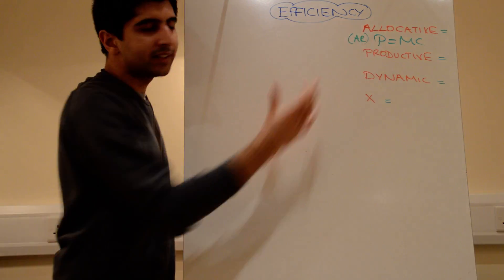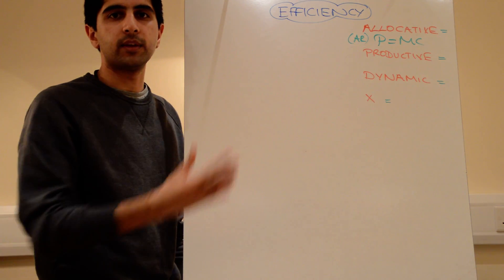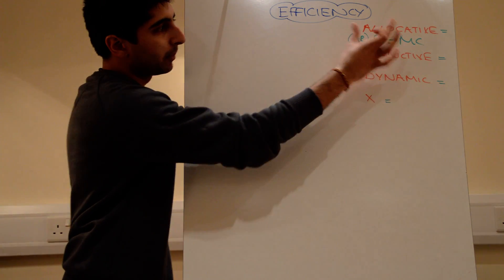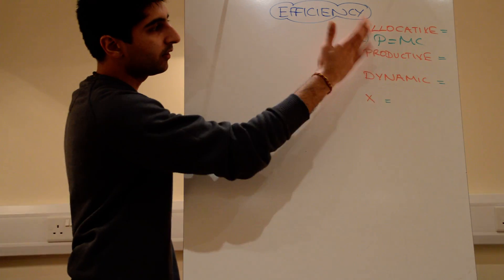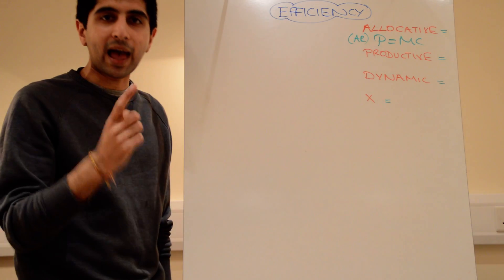If you need to understand that in more detail, look at my video, why is allocative efficiency where P equals MC, and it will make more sense. But that's the basic point. Where price equals marginal cost, where the demand curve equals the supply curve, we have allocative efficiency.